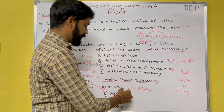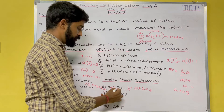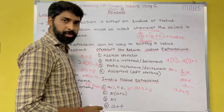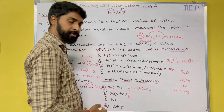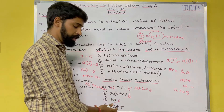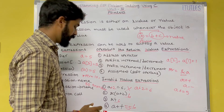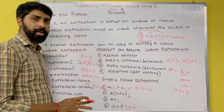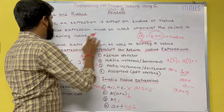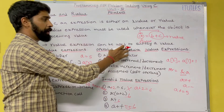Now let's see some invalid r-value expressions. 'a + 2 = 6' is invalid, whereas 'a = 2' is valid. 'a++ = 5' is also invalid. I hope you all understand l-value and r-value. L-value means the object is receiving a value; r-value means it supplies the value.